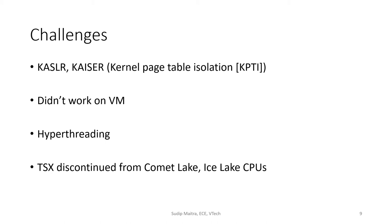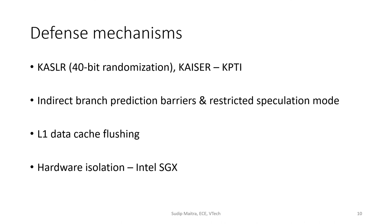Disabling hyper-threading improved performance in my case, and this implementation also doesn't work on newer CPUs like Intel Comet Lake and Ice Lake because Intel has discontinued TSX. Although KASLR is easy to overcome, KAISER was inspired by the weakness of KASLR. KASLR is a viable software solution, but it is not without performance degradation. CPU manufacturers have also implemented other restrictions such as branch prediction speculation and cache flushing.